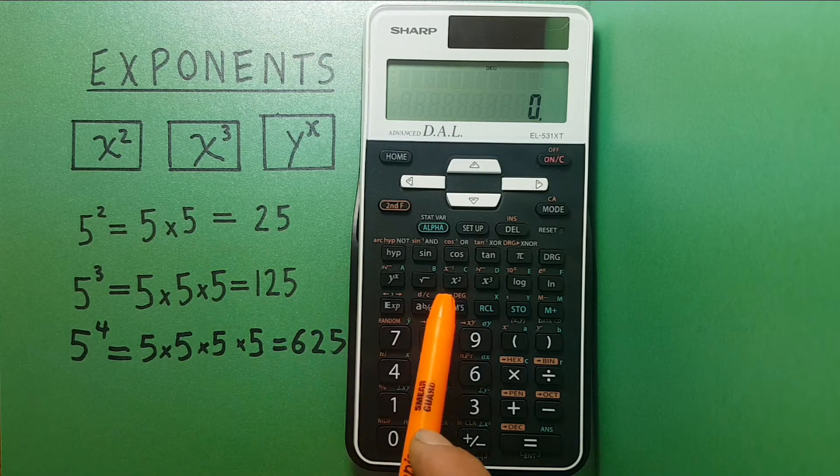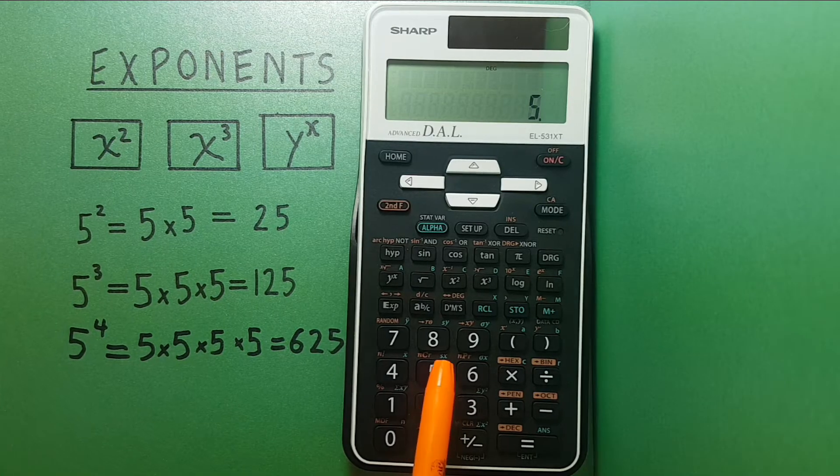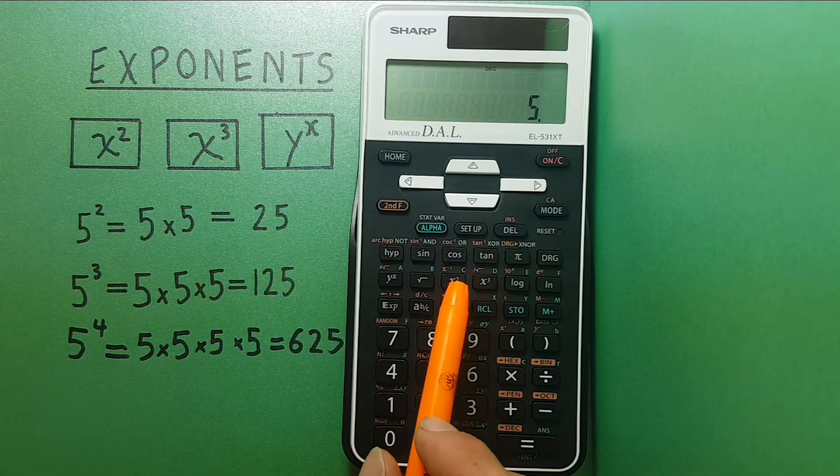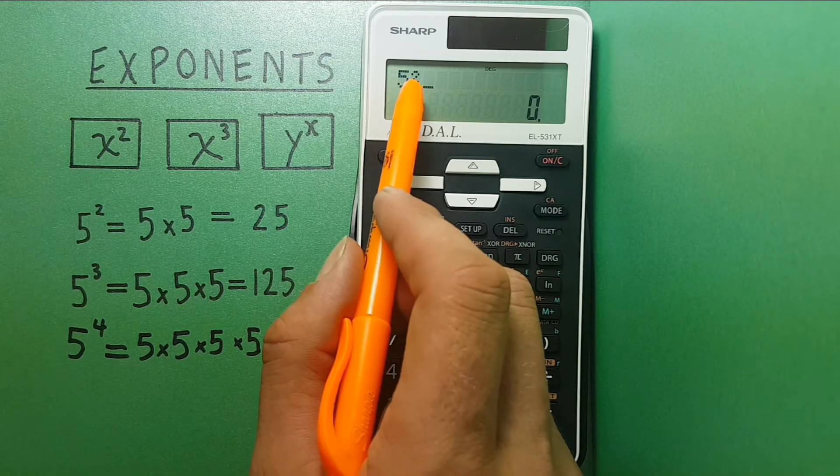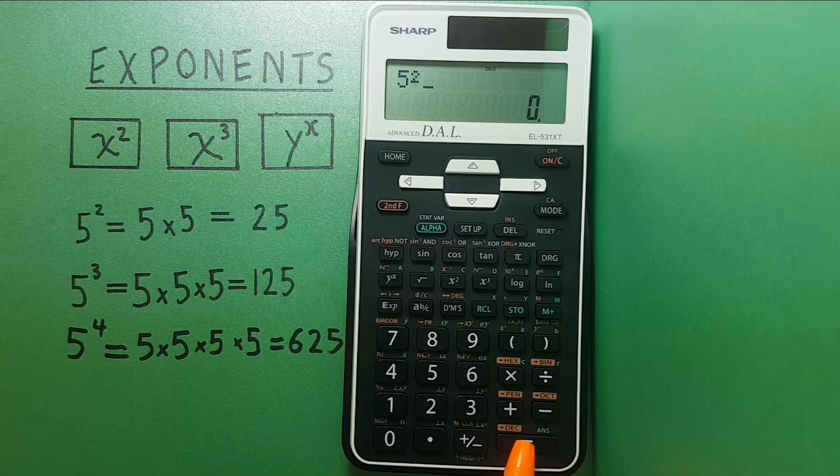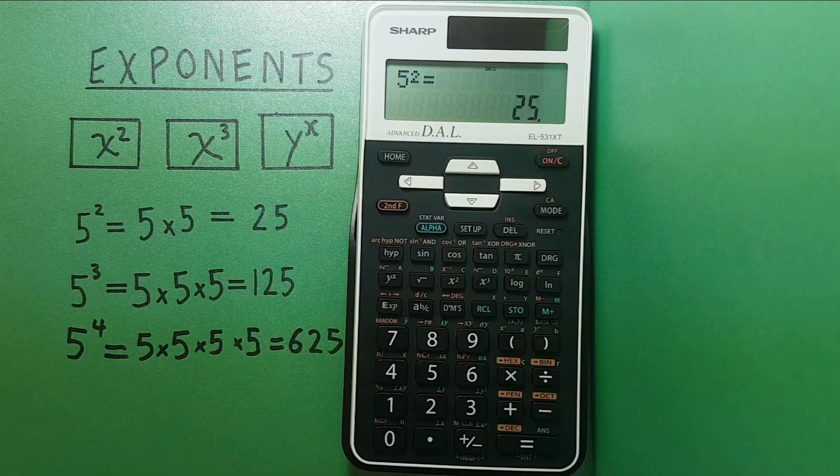To do this we will use the X squared button. So we start by entering the number and then the X squared button, and we see 5 squared on the top row. We then press equals and get the correct answer of 25 on the bottom row.